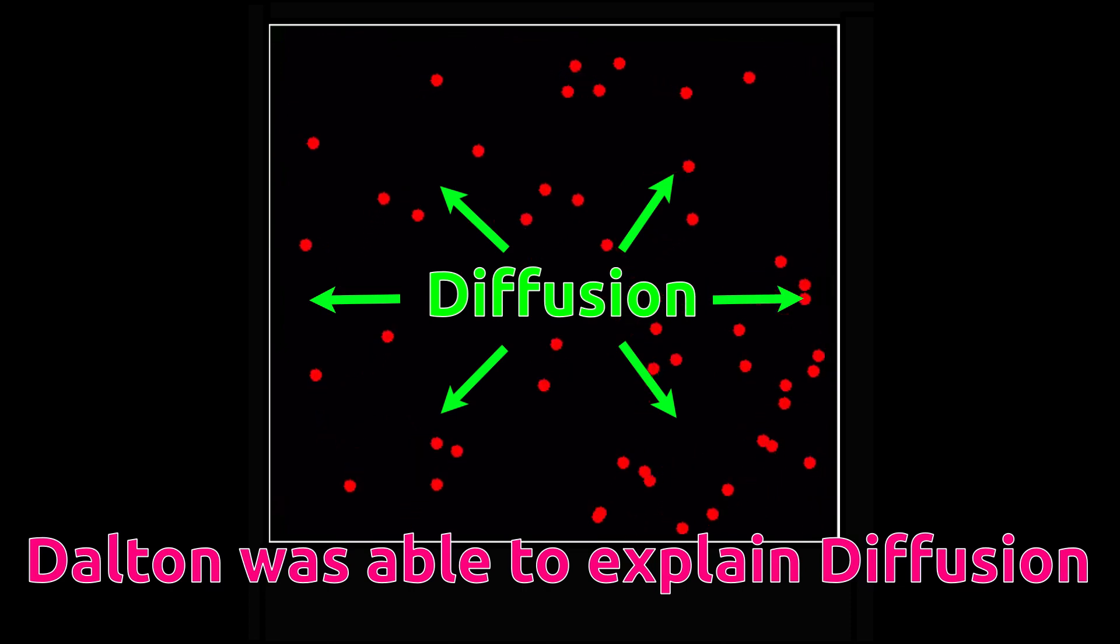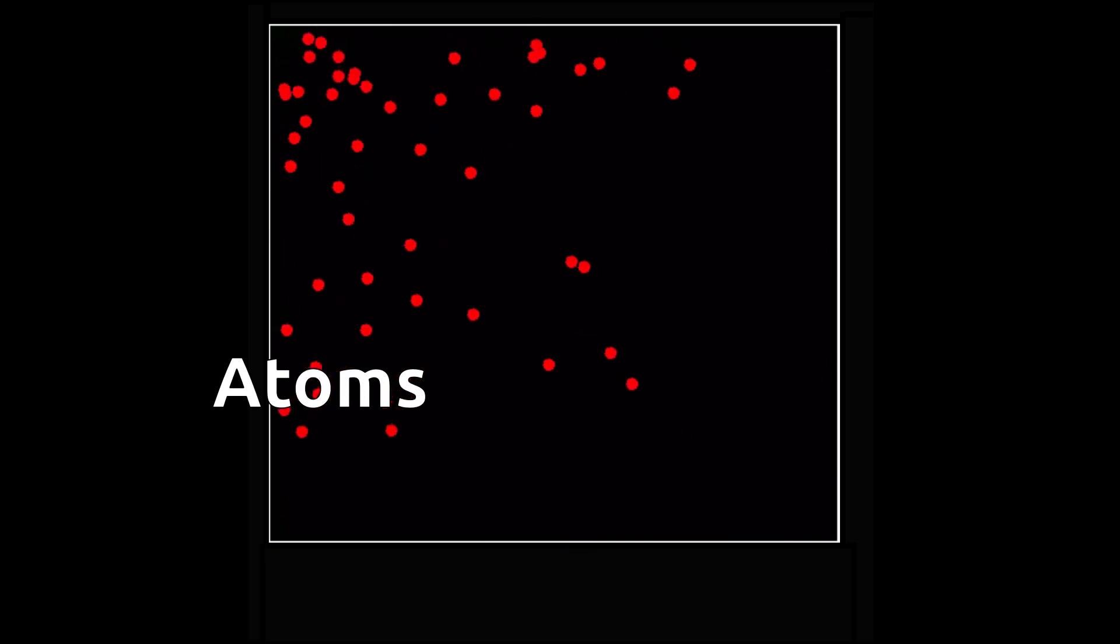Dalton's point that everything is made of atoms supported this diffusion in gas. Atoms of gas get distributed throughout the room and thus scent reaches everywhere.